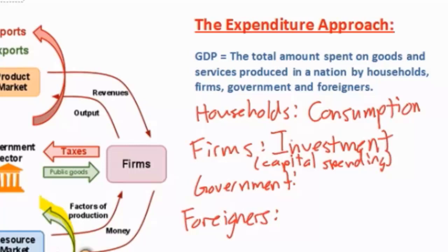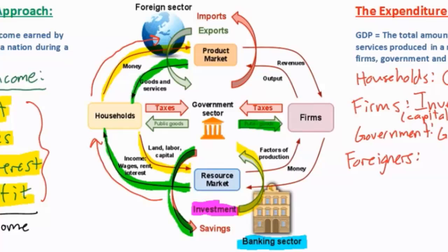The next stakeholders who spend money are the government — we simply call this government spending. Governments spend money on education such as public schools, infrastructure such as roads and bridges, and healthcare for the elderly, unemployed, or poor households. Anytime a government provides public goods to firms or households, this is government spending and is therefore an injection into the circular flow. Taxes paid by households and firms go to the government to fund these goods and services, so taxes are considered a leakage while government spending is an injection.